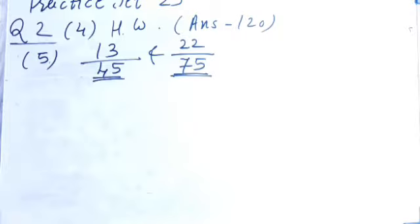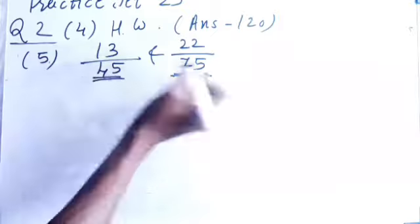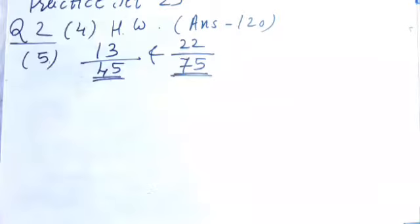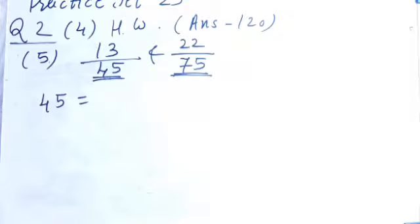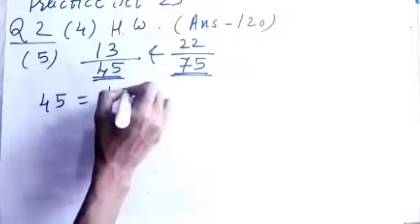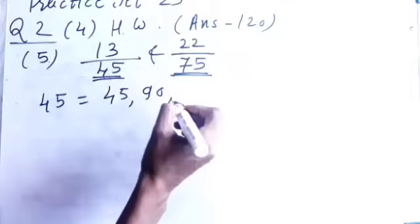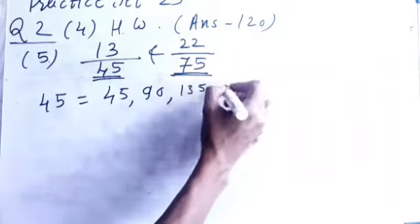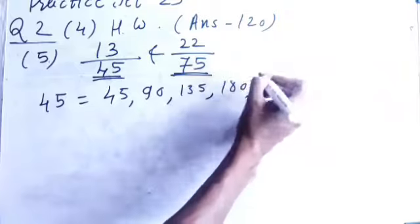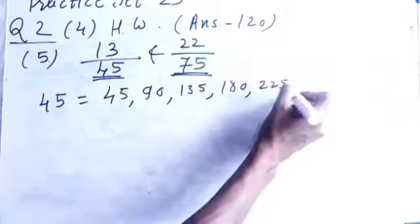To equalize the denominators we have to find which number comes in the table of 45 and 75 also. That means, we need to find that multiples means LCM we have to find. So, we have to write the table of 45. So, 45, 90, then 135, then 180, 225 and I will stop.